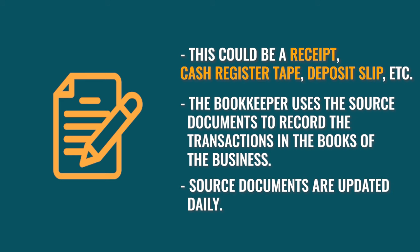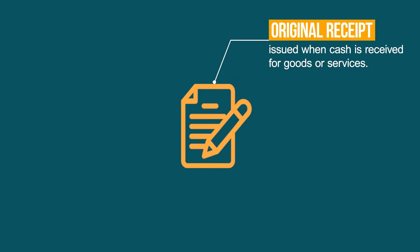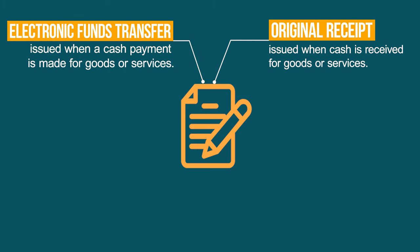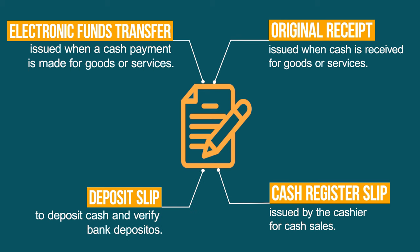Let's have a quick recap on the different source documents. An original receipt is issued when cash is received for goods and services. An Electronic Funds Transfer, or EFT, is issued when an electronic cash payment is made for goods or services. A cash register slip is issued by cashiers for cash sales. A deposit slip is issued when people deposit cash into the bank account and receive proof or verification of the deposit.